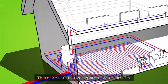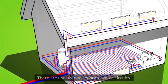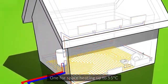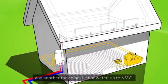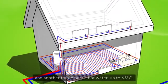There are usually two separate water circuits: one for space heating up to 55 degrees Celsius and another for domestic hot water up to 65 degrees Celsius.